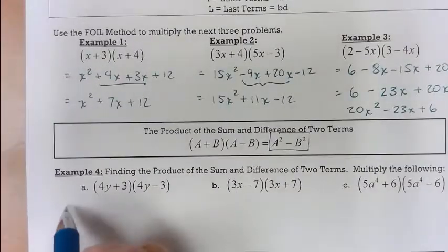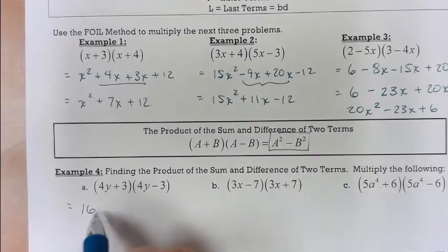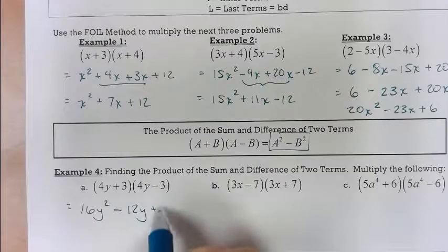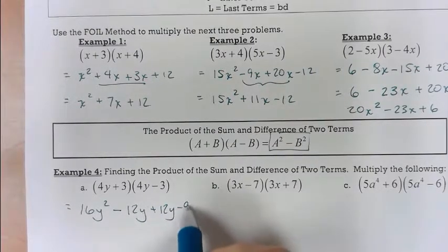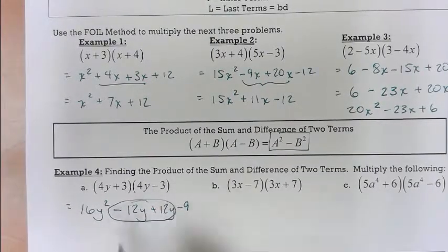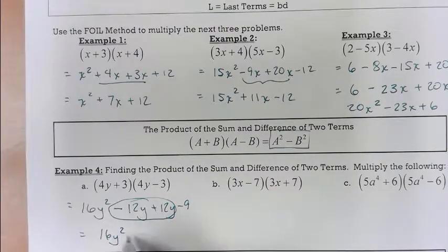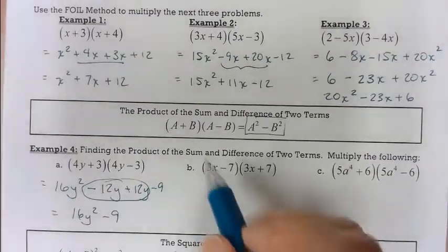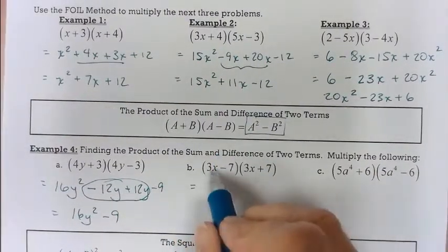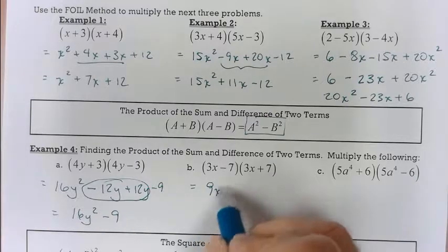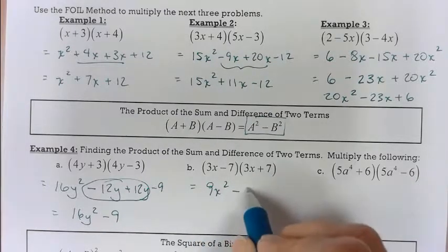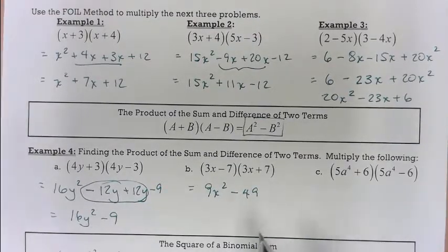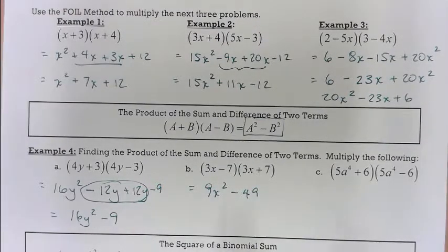I'm going to foil this first one so you can see what is going on. Notice these are opposites. Notice they eliminate one another. That would be my answer. Now if I knew that formula, then I could go first times first and last times last, and I would be done with it. But you have to remember the conditions that have to be met in order for it to work.